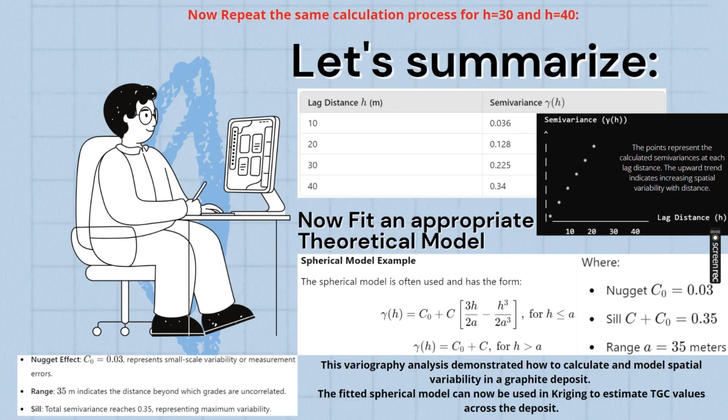For graphite, mineralization grade is also dependent with reference to some distance. Suppose from center of the main graphite body towards north, it is gradually decreasing. How long will it decrease? After a certain distance, or else towards east, with distance graphite value is increasing. How long will it increase? After going a certain range, certain value, peak value, then it will not be increasing. Because everything is spatially related.